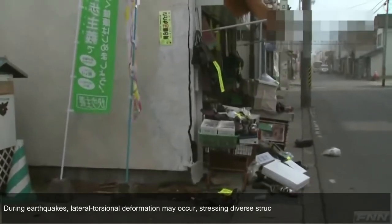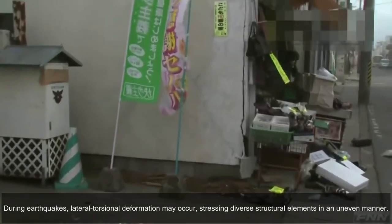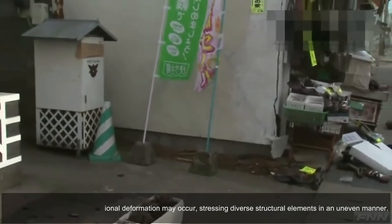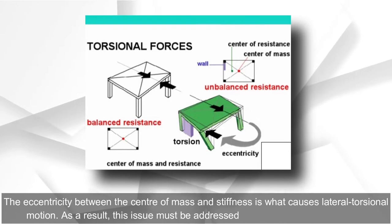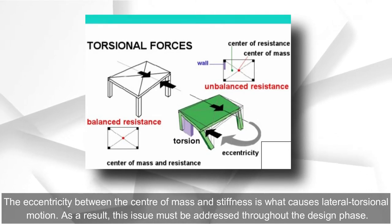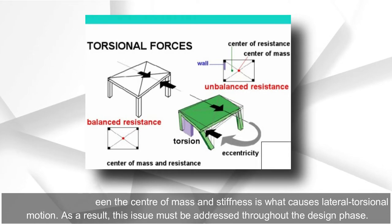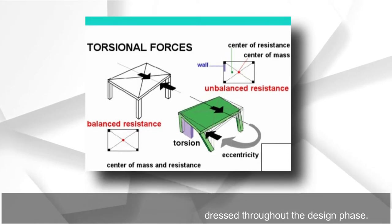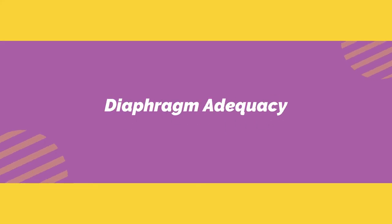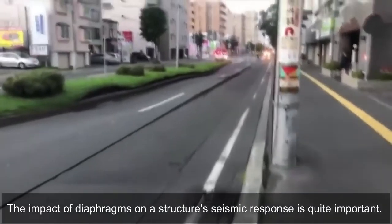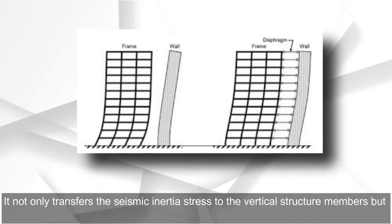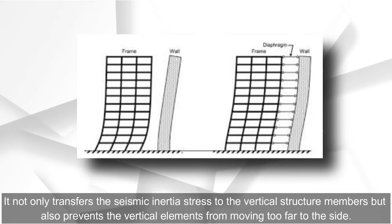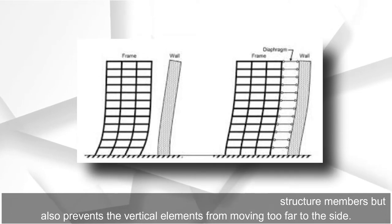Torsional: during earthquakes, lateral torsional deformation may occur, stressing diverse structural elements in an uneven manner. The eccentricity between the center of mass and stiffness is what causes lateral torsional motion. As a result, this issue must be addressed throughout the design phase. Diaphragm adequacy: the impact of diaphragms on a structure's seismic response is quite important. It not only transfers the seismic inertia stress to the vertical structure members but also prevents the vertical elements from moving too far to the side.